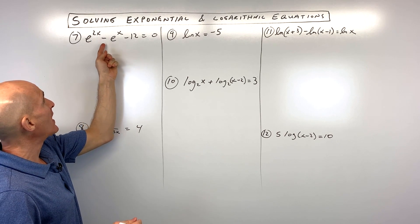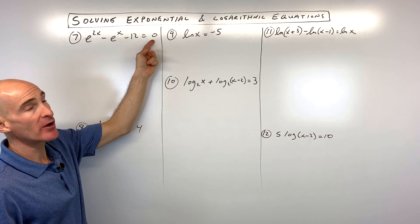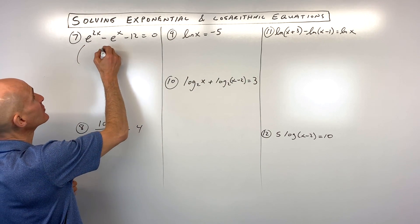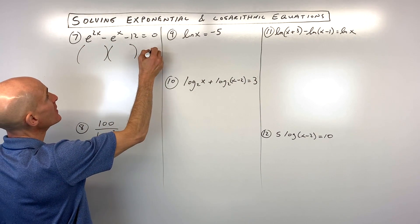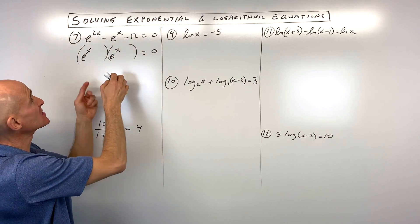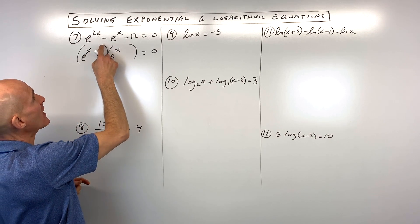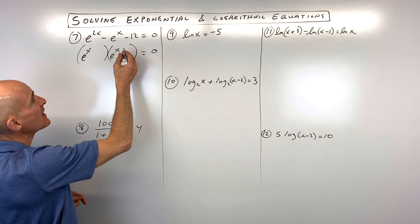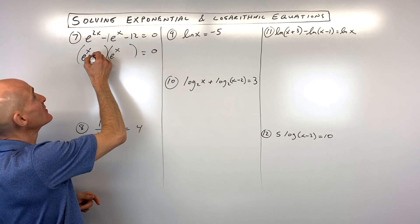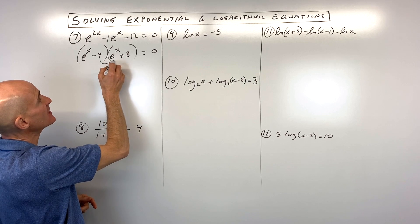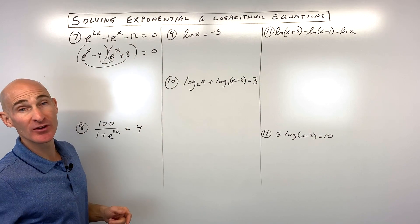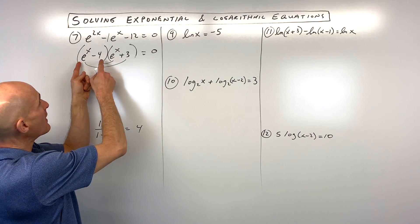We're getting a little more challenging now. Number 7: e to the 2x minus e to the x minus 12 equals 0. The technique here is to factor into two binomials. e to the x times e to the x equals e to the 2x, because when you multiply you add exponents — x plus x equals 2x. What multiplies to negative 12 but adds to negative 1? That's negative 4 and positive 3.